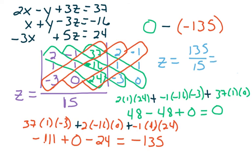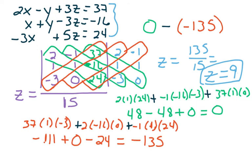0 minus a negative 135 makes that a positive 135. So z equals 135 over 15, which ends up equaling 9. So we get z equals 9. We can check with all the equations that x equals 7, y equals 4, and z equals 9 all work.